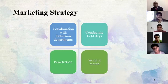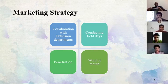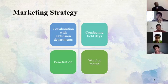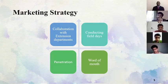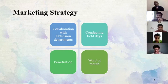Now we'll talk about the marketing strategy. We are going with four strategies. The first is collaboration with the extension department — collaborating with different state universities and Krishi Vigyan Kendras (KVKs), which will give more impact and introduce our products to customers, mainly farmers. The second is conducting field days, where the company goes to different agroclimatic zones, targets special crops present there, and conducts field trials to give farmers exposure to specific herbicides or insecticides.